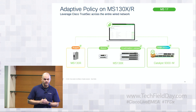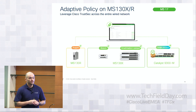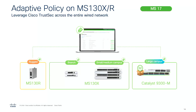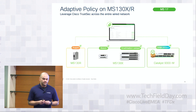This has been a really exciting one. MS17 is going to be our first introduction of adaptive policy on compact switches — across our MS130X models and our ruggedized switch. This means we're able to bring inline SGTs, micro-segmentation, and control down to even little desktop compact switches, all through dashboard. This will interoperate with the rest of the TrustSec-capable devices that Cisco has — so if you have a C9300-M as your core or in large closets, you can also connect these smaller compact MS130Xs. This is set to launch right with MS17.